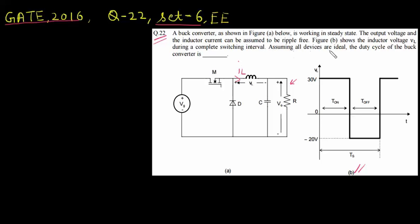Assuming all devices are ideal, the duty cycle of the buck converter is, so we have to find the duty cycle of the buck converter. So to solve this question we must know what is the inductor voltage during ON and OFF interval. So let us see. So this is a buck converter, it has one switch S.